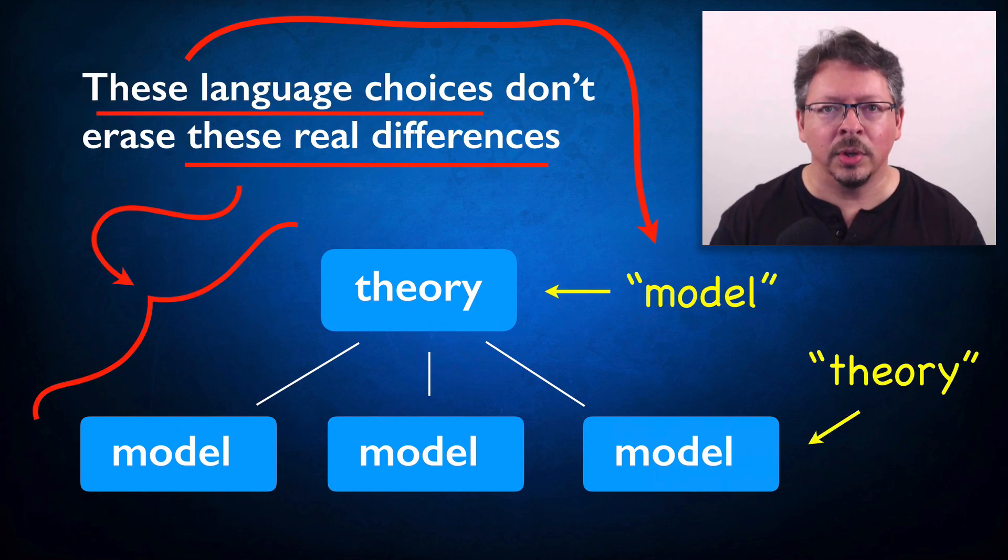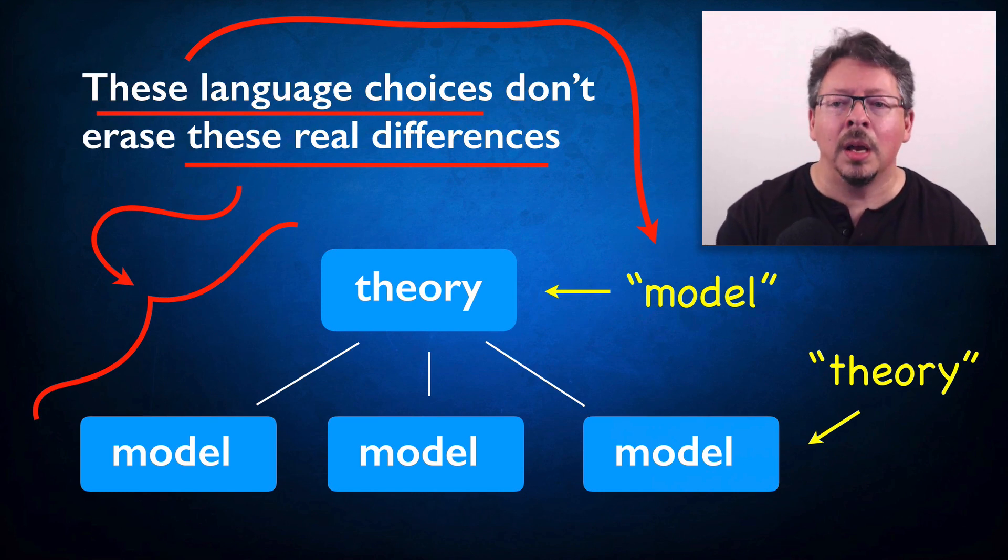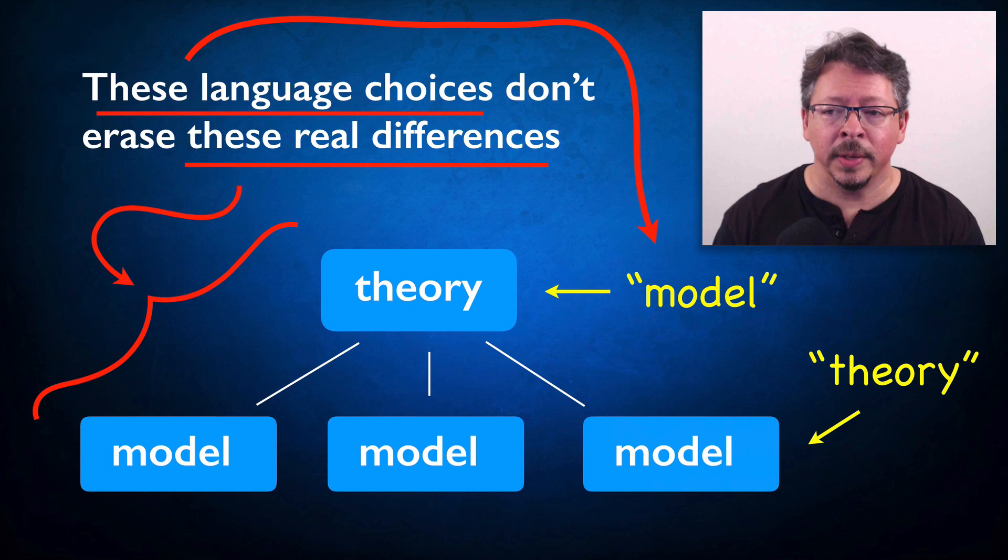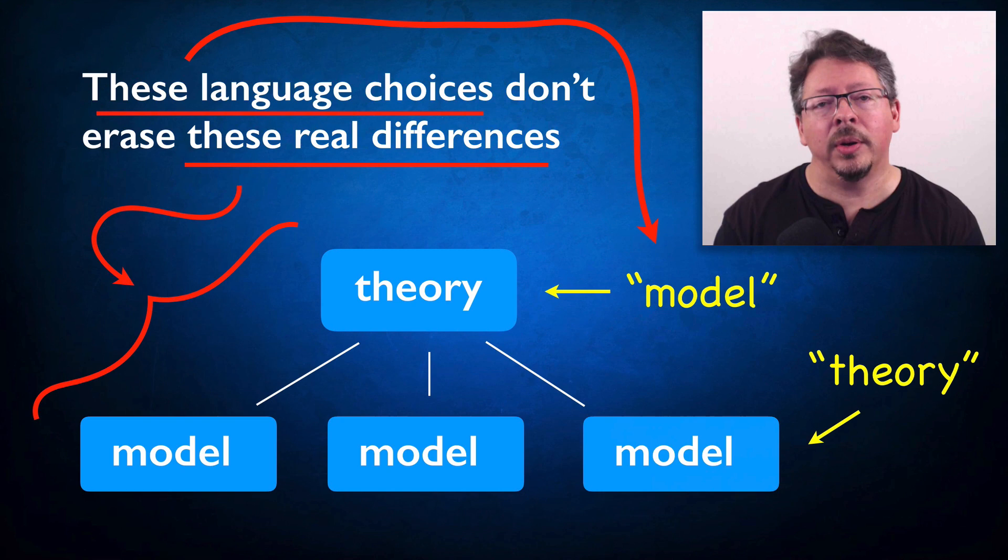This is important to remember even if someone finds a reason to call the higher level theory a model and the lower level model a theory. There's enough flexibility in how these terms are used that you might encounter this. But that doesn't erase the real differences that are there. We don't want the terminology to obscure the hierarchical relationships between high level theories and lower level models that we often see in mature scientists.